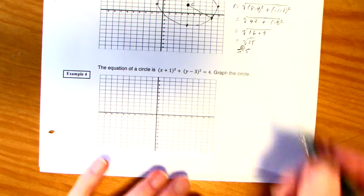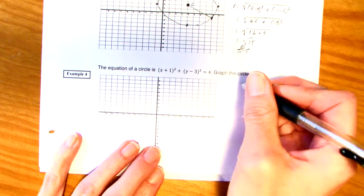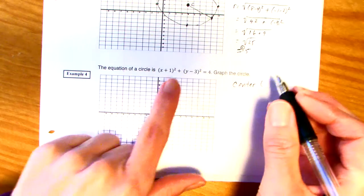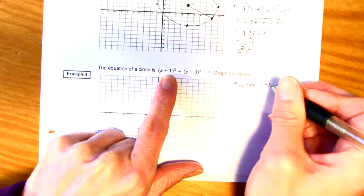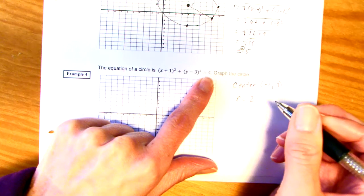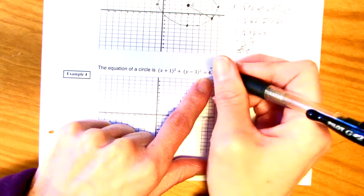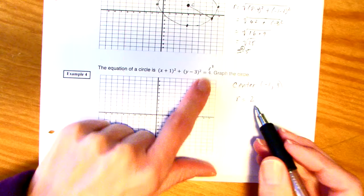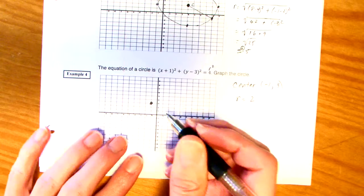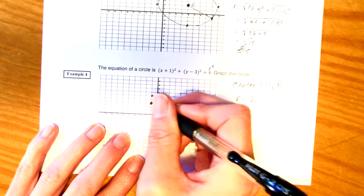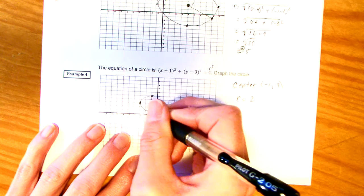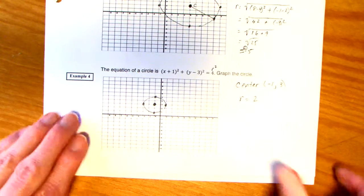Now, what if you have an equation? Could you graph it? Well, we have to dissect our center and radius. We've got to dissect our equation. So, we have the center. Remember, the signs change. Negative 1, 3. And the radius is going to equal 2. Because, remember, this is r squared. So, r by itself will be 2. So, negative 1, 1, 2, 3. And then from there, we want to go up 2, over 2, down 2, over 2. And draw your circle. Easy so far, right? Not too bad.